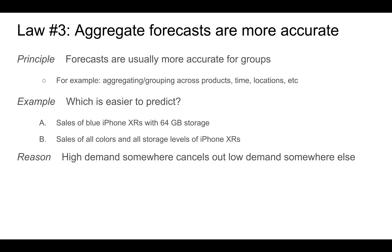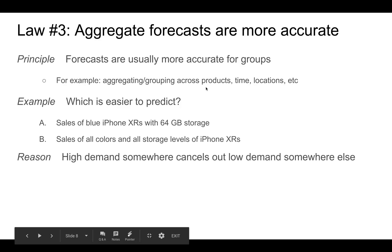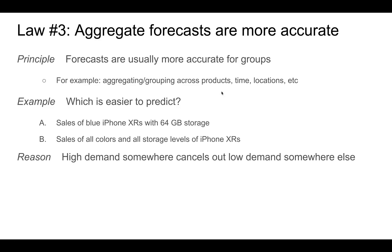The third law states that aggregate forecasts are more accurate than individual forecasts. Forecasts for groups of things are better than forecasts for individual things. This aggregation could be across products, across time, across locations, or some combination of these. For example, which is easier to predict — the sale of blue iPhone XRs with 64 gigabytes of storage, or the sales of all colors and all storage levels of iPhone XRs? The reason why demand is easier to predict for groups is that high demand of one type will cancel out low demand of another type when you sum many different demands.